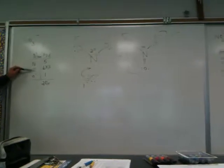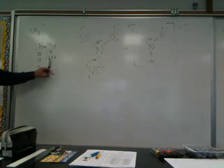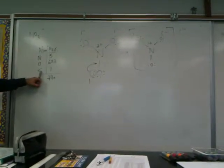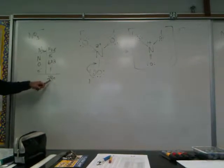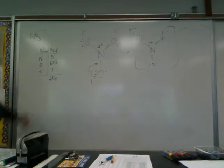Oxygen is in group 16, it has 6 valence electrons, and there are 3 oxygens in nitrate, so we multiply it by 3. And lastly, there's a negative charge on the nitrate anion, so we're going to throw in an extra electron. So the total number of electrons that appear in the Lewis structure for nitrate is 24.